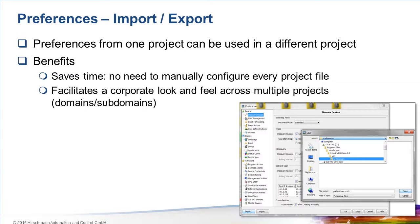Typically, large networks will use the domain and subdomain hierarchy, which involves multiple instances of Industrial HiVision. Each instance will need to be customized individually. So we've introduced an option to export the customized preferences to a file. This preferences file can then be imported into another instance of Industrial HiVision — for example, a subdomain instance. Now the appearance and behavior of the domain and subdomain are the same, resulting in a consistent look and feel across the entire network.